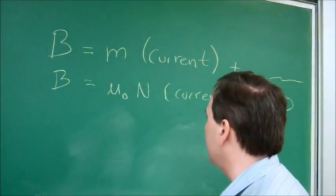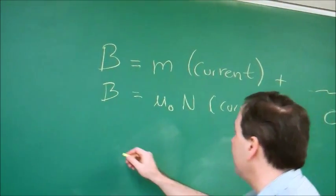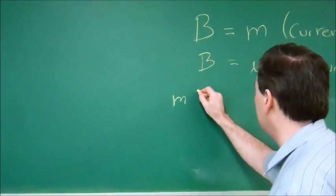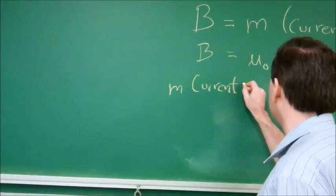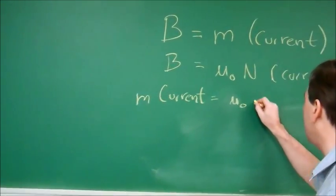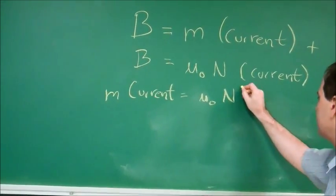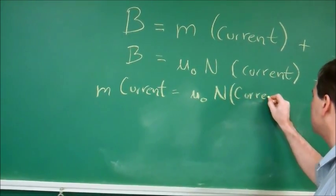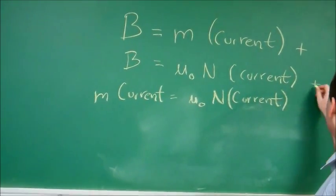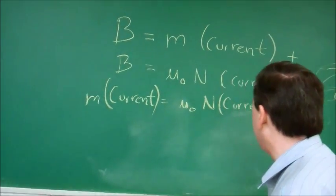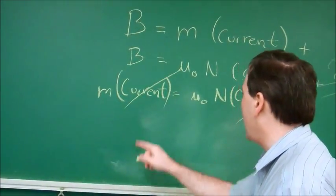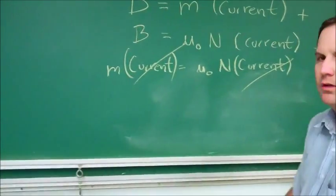If we set these two equal to each other, we get that m times the current is equal to mu zero N times the current. Because those two numbers, they cancel out. We can cancel out the currents.